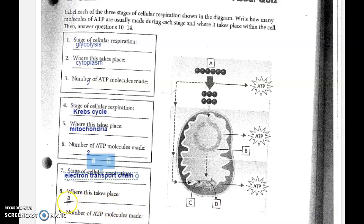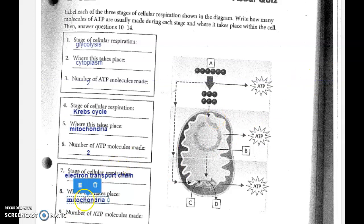The electron transport chain is also taking place in the mitochondria. Depending on the efficiency of the mitochondria, it's going to produce about 34 to 36 ATP. That's a grand total of about 38 or so ATPs from that one molecule of glucose that started the whole process.